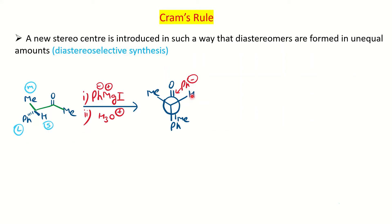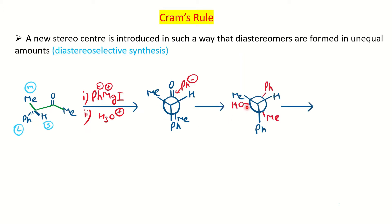Now attack the nucleophile from the small side of the group. The small side is hydrogen here. If this nucleophile attacks from here, the O-minus will go on the other side. After hydrolysis it will convert to OH, and Me is already there in the other position. I am representing this with red color to distinguish the three groups from the other side.